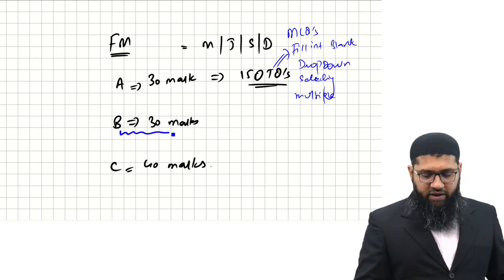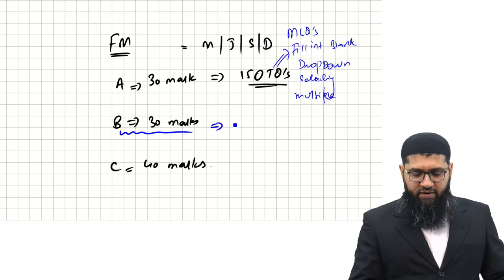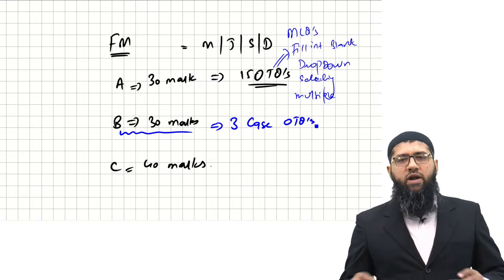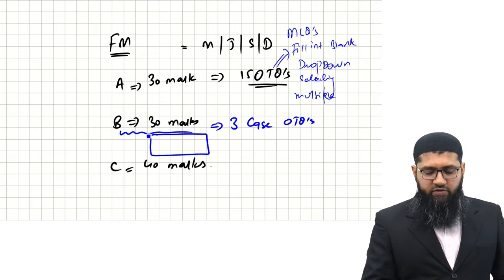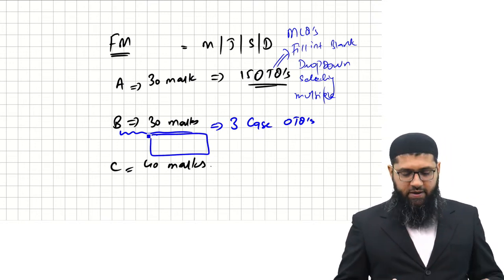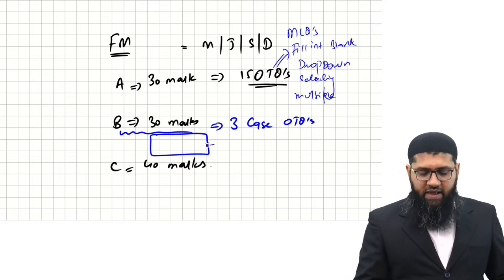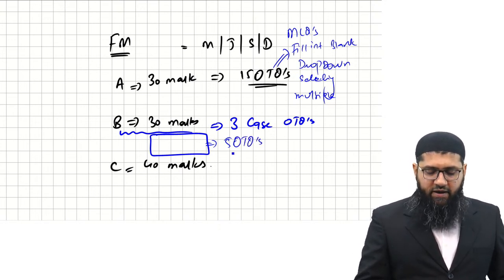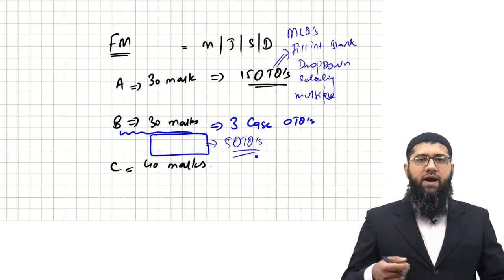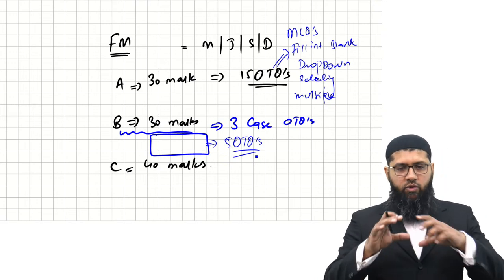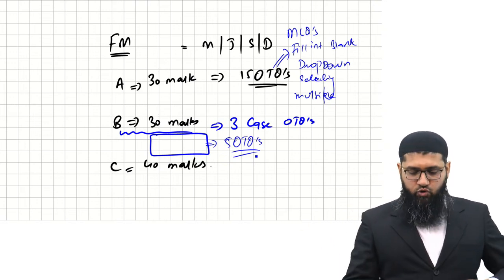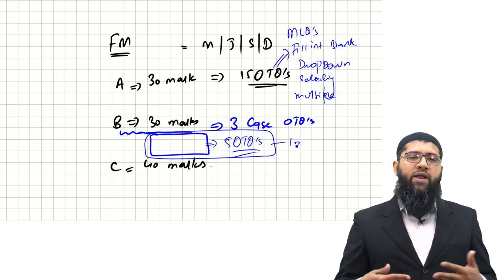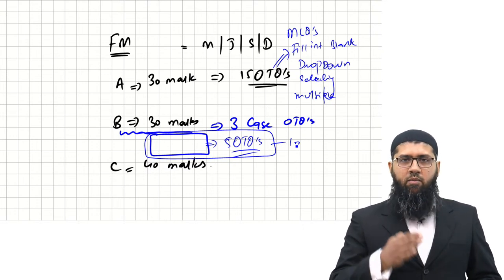In Section B, there are three case OTQs. The examiner gives you a simple case study and alongside it asks five OTQs per case study. Each case study is worth ten marks — ten, ten, ten — making up the full 30 marks for Section B.